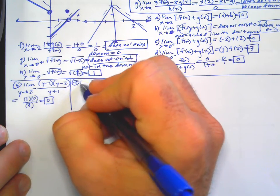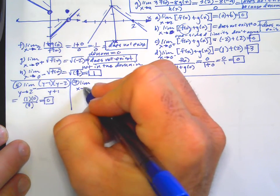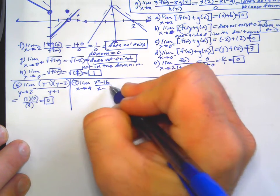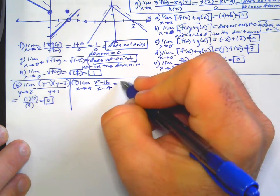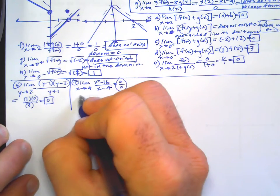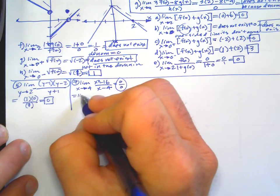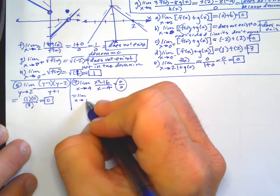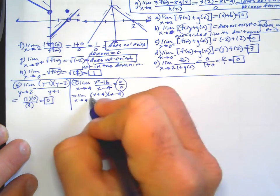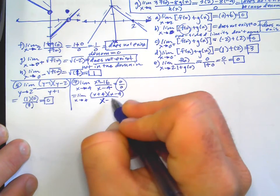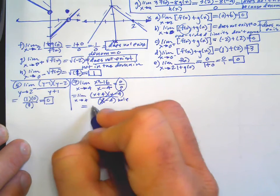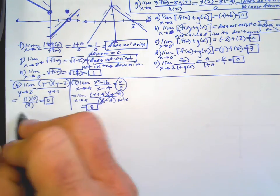Number 7: limit as X approaches 4 of (X squared minus 16) over (X minus 4). If we just plug numbers in first, we get 0 over 0. Which means we should probably look for a hole in the graph by factoring. So we're going to factor it — X plus 4 times X minus 4, difference of squares. Sure enough, there's a hole in the graph. Plug 4 into what's left — the answer is 8.